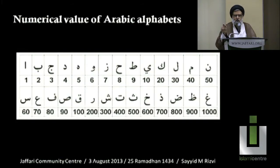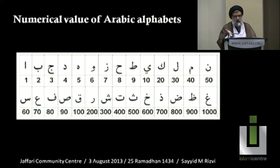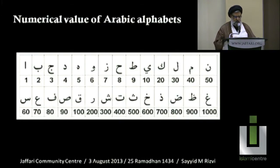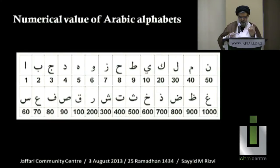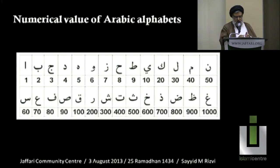However, it doesn't go by the standard sequence. It's not Alif, Ba, Ta, Tha — no. It is Abjad, Hawwaz — Alif, Ba, Jim, Dal, He, Waw, Za. But this is how it goes, and this system is used in different ways.